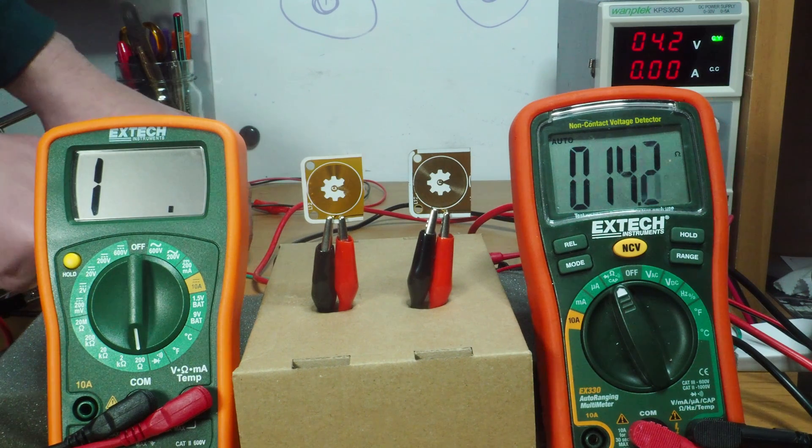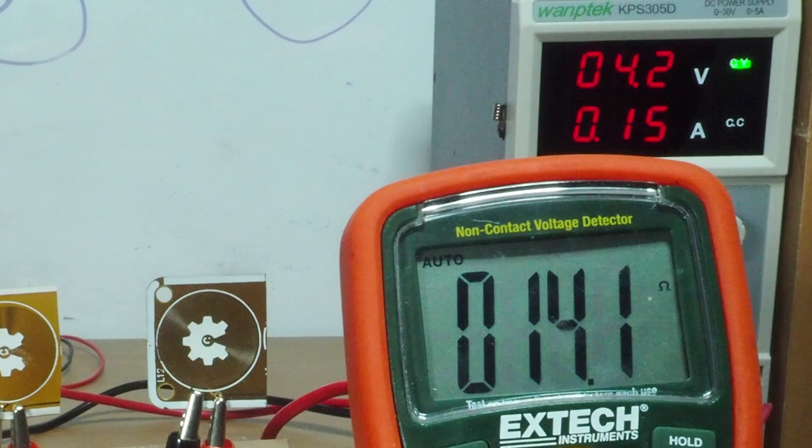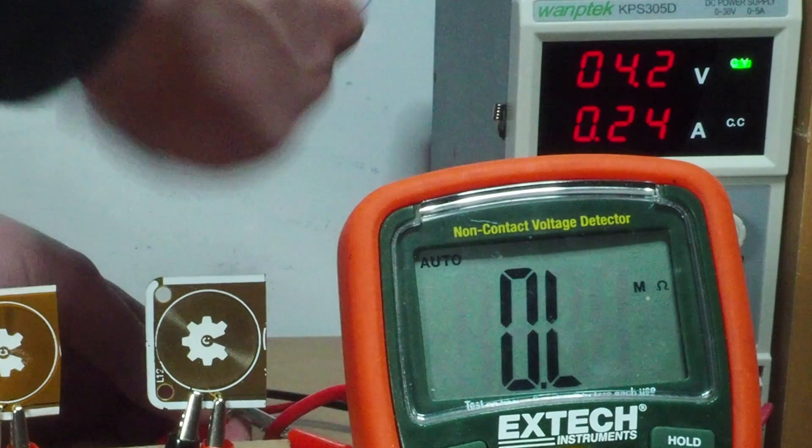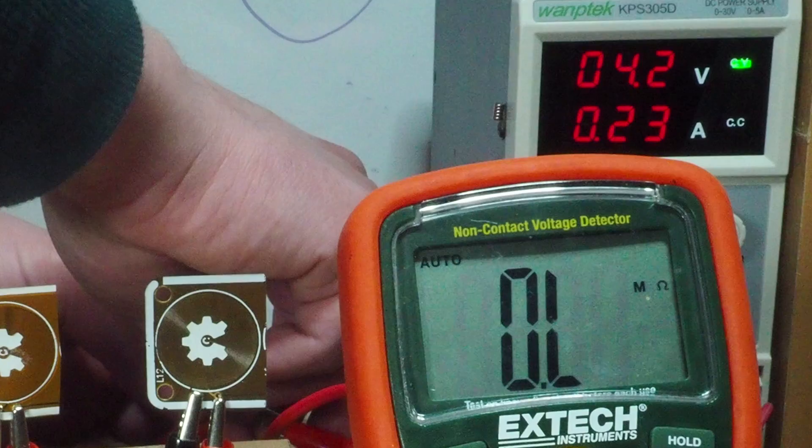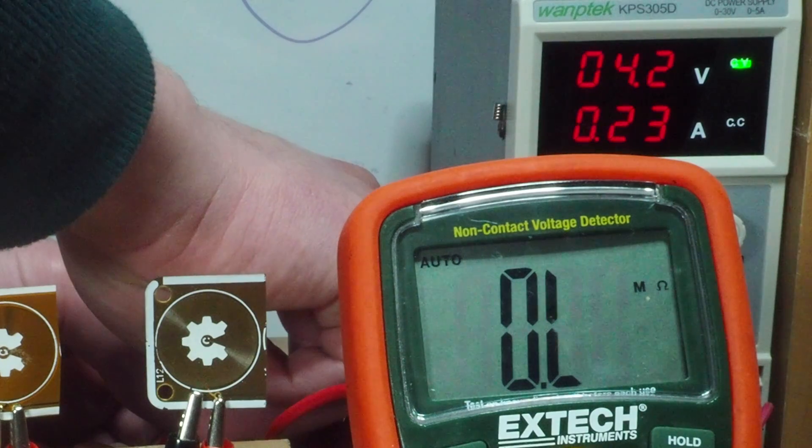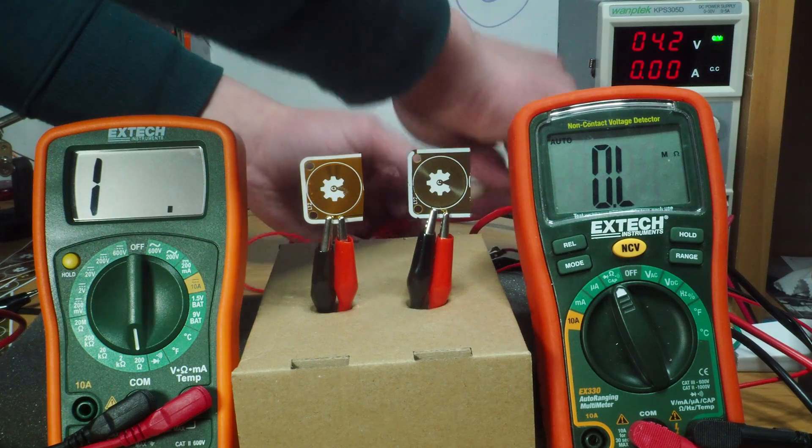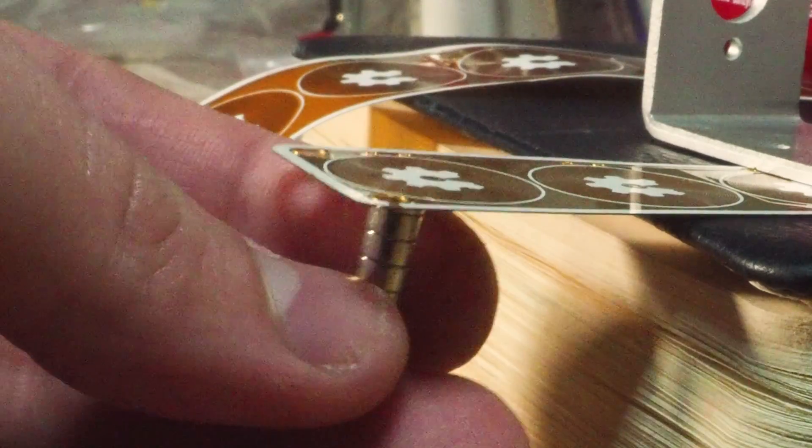So for example, for 4.2 volts the thinner coil is drawing around 150 milliamps while the thicker coil is drawing around 230 milliamps. This isn't necessarily a bad thing because pumping more current through the coil makes the magnetic field stronger.